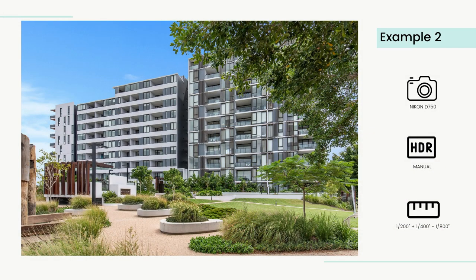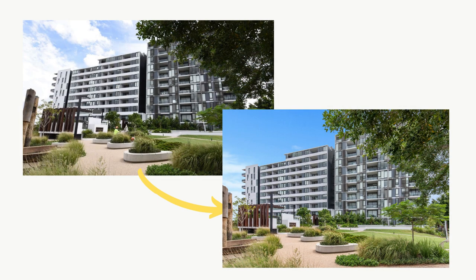Example 2: This example is of an apartment complex that has been photographed with the landscaping in the foreground, leading the viewer's eye up to the building façade. It was captured using a Nikon D750 DSLR with three exposures — one overexposed, one neutral, and one underexposed.